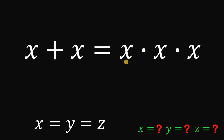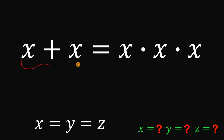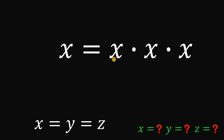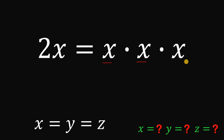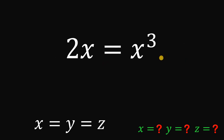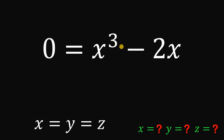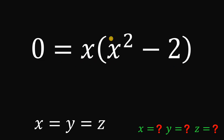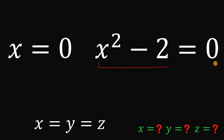Let's simplify this equation. We have x plus x, which gives us 2x. And on the right-hand side, x multiplied by x multiplied by x is just x raised to the power of 3. Now, to solve for the values of x, don't divide both sides by x, as we would miss some values. Instead, let's equate this to 0, giving us 0 equals x cubed minus 2x. We have a common factor of x, so we factor out x. This gives us 0 equals x multiplied by the quantity x squared minus 2. Using the zero product property, x equals 0 or x squared minus 2 equals 0.